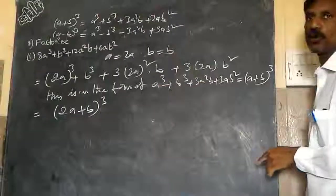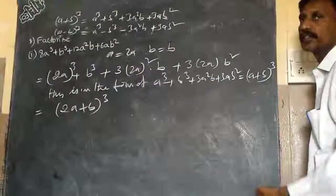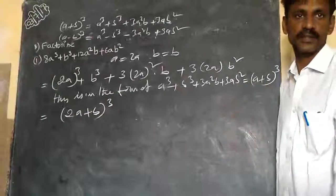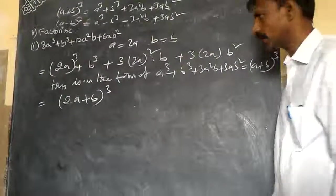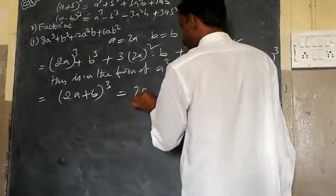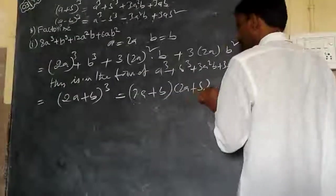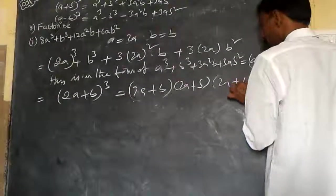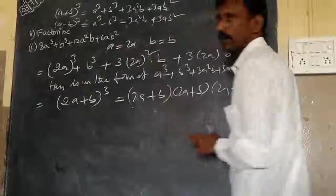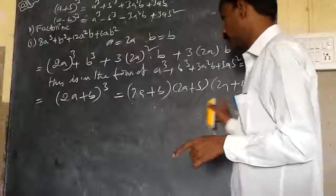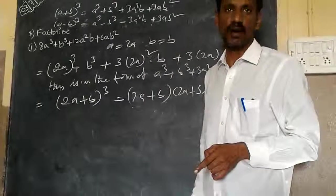In place of a I will write it down only 2a. In place of b here it is, because b is b. So now we write down (2a+b) into (2a+b) into (2a+b). I write this one or not? I write it 3 times, just like power.